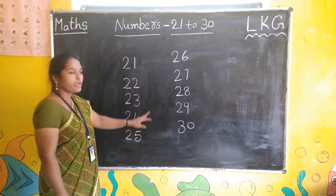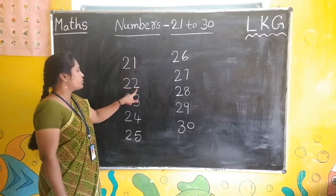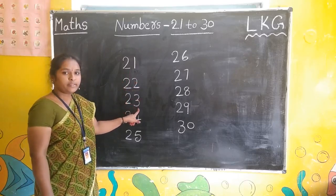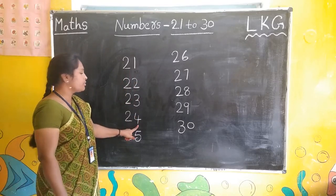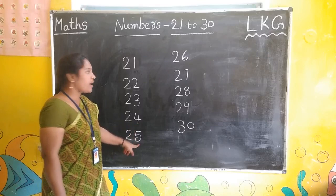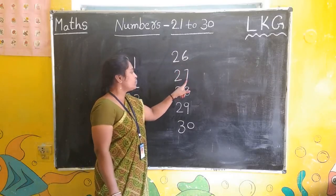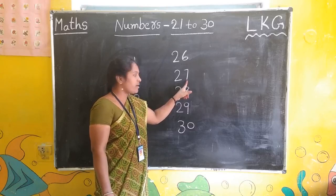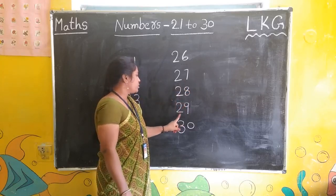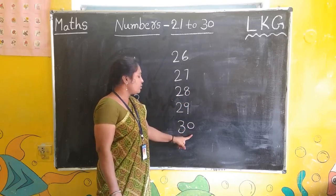Once repeat, children. Say it loudly: 21, 22, 23, 24, 25, 26, 27, 28, 29, 30.